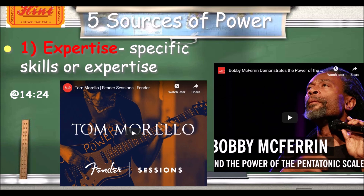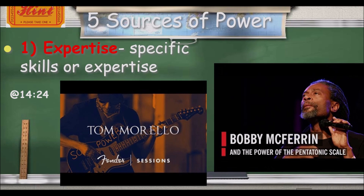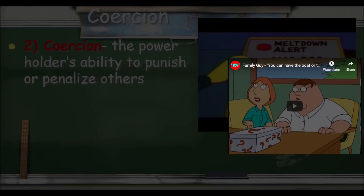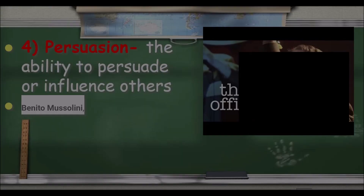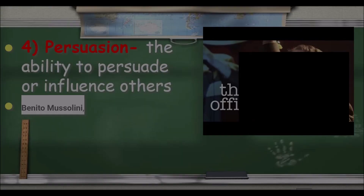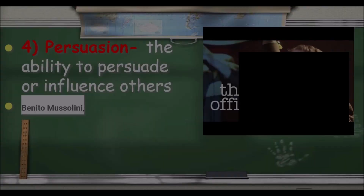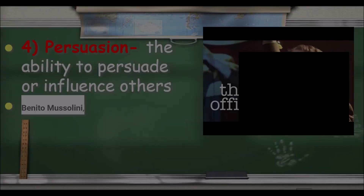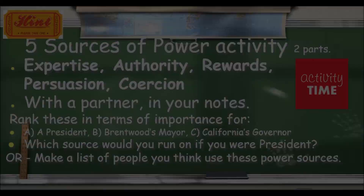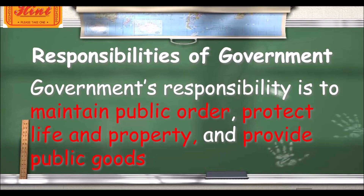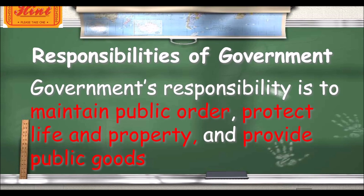Today we're going to talk about systems of government. Just wanted to take a quick second and recap what we did last class: the five sources of power. Expertise, having the ability to punish or penalize through coercion. Number two, reward system, using positive incentives. Four, persuading people to influence others. Five, formal authority when you have a position of power. We'll have a quiz coming up soon. I also wanted to recap: the role of government is to maintain public order, to protect life and property, and provide public goods. Feel free to pause and go over those again to recommit them to memory if you need that.